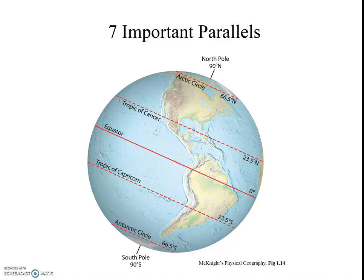I encourage you to find a globe, for instance in the library, and find these important parallels. You can also see the parallels on figure 1.14 from your text, but I do recommend that you seek out a globe or use Google Earth. When using Google Earth, activate the grid lines by clicking on the View tab and then selecting Grid. It is vital that you know the names and values of these important parallels. Consider writing them down in your notes. For example, the Tropic of Cancer is 23.5 degrees north — not 23 degrees or 25 degrees, but 23.5 north.